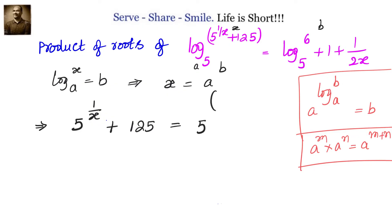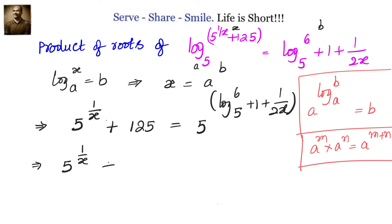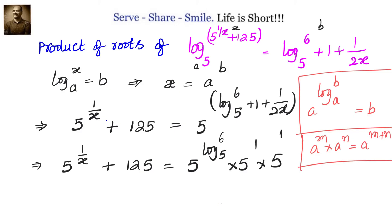That means 5 to the power of (1/x + 125) equals 5 to the power of (log₅6 + 1 + 1/2x). On the right hand side, we apply the formula a^(m+n) = a^m · a^n. Since we have three terms being added, we will have three multiplications: 5 to the power of log₅6, into 5 to the power of 1, into 5 to the power of 1/2x.